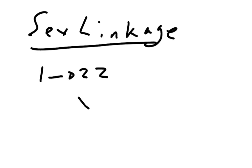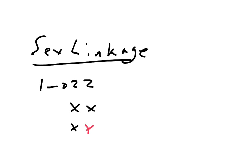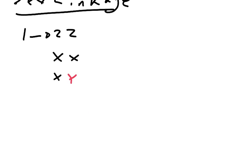Girls have got two X chromosomes, boys have got an X chromosome and a Y chromosome. That means that if a gene locus is on the X chromosome, girls can carry two copies of it like any normal autosome, boys can only carry one copy of it because they've only got one X chromosome.